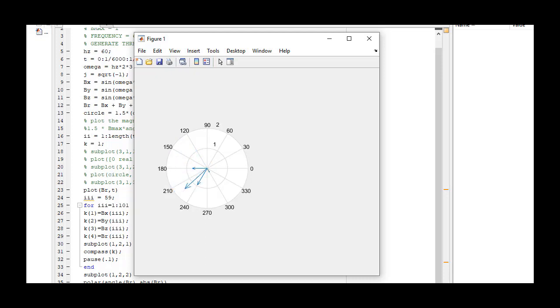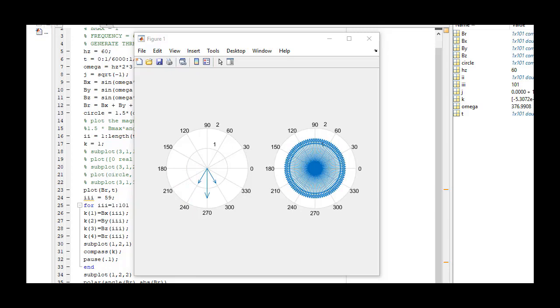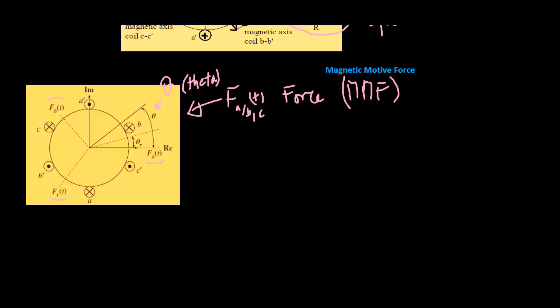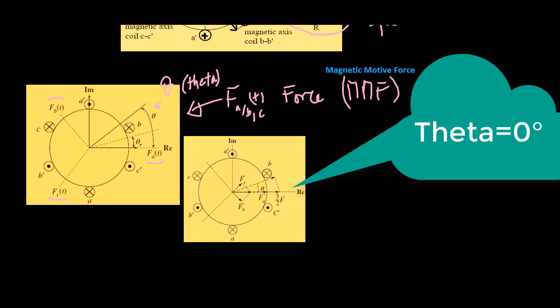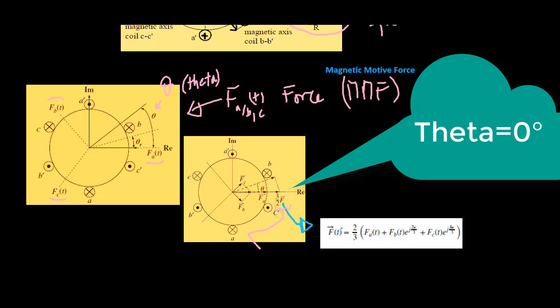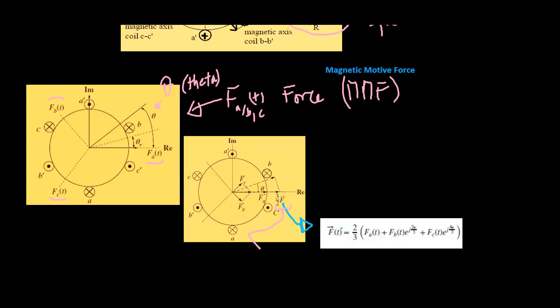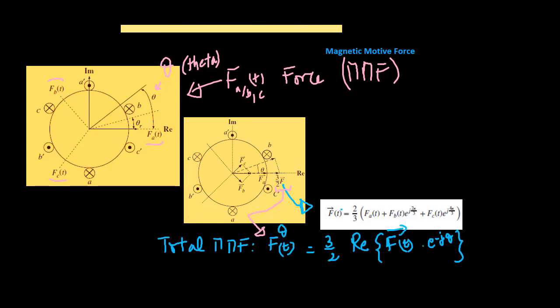Observe that the maximum value of the resultant is 1.5 as it is indicated by the circle. Based on the calculation of the total MMF at the position theta, the space vector of the three phase peak MMF is defined. Using this definition, the total MMF at the position theta is expressed accordingly.